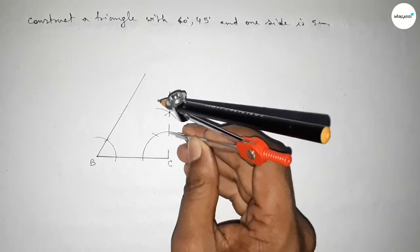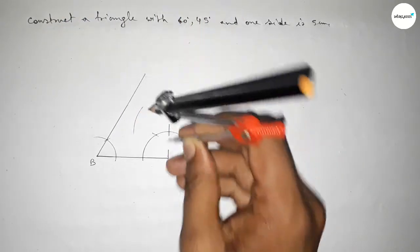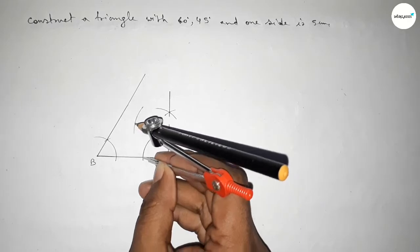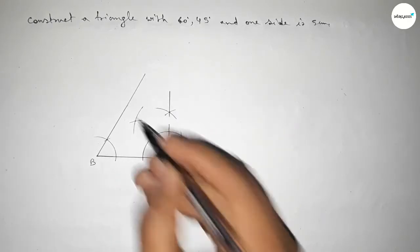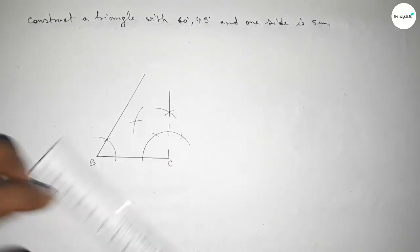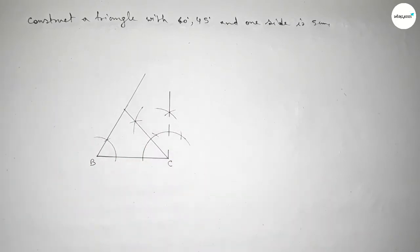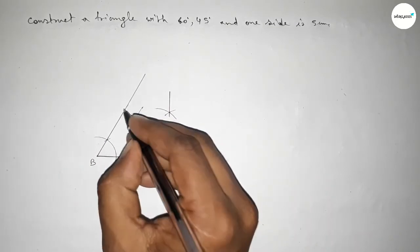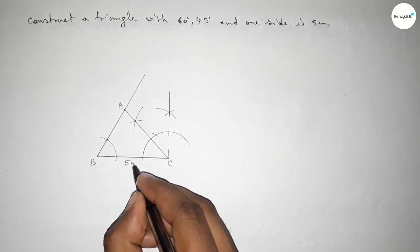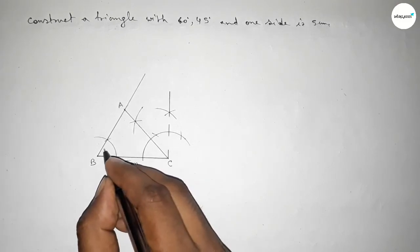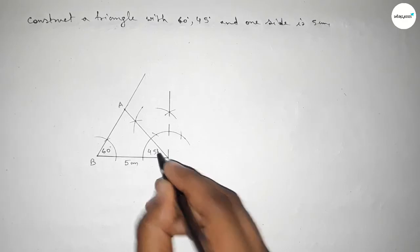We have to bisect this 90 degree angle to get 45 degrees. Putting the compass and taking any length, drawing an arc, then cutting with the same length — both curves intersect at a point. Joining this bisector line, both construction lines intersect at point A.